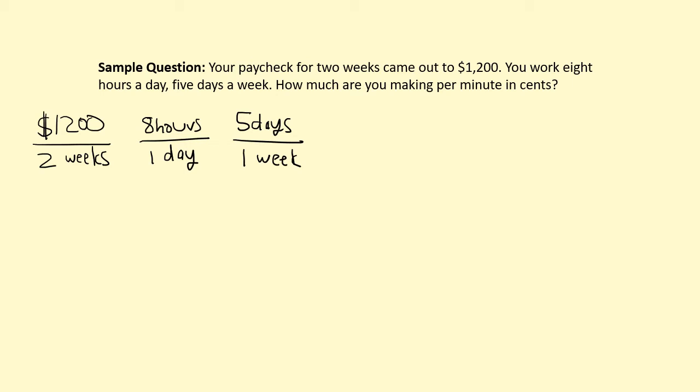There are two basic types of units we're looking at: time, like hours, days, or weeks, and money, like dollars and cents. We need to get time down into minutes, and the smallest unit of time we have is hours, so we'll use the fact that there are 60 minutes in one hour. We'll also use the fact that there are 100 cents in one dollar. So these are the five rates I'm going to use for my dimensional analysis.